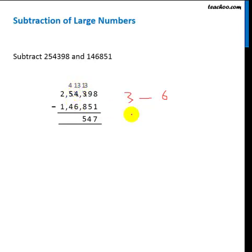Now thirteen minus six is seven. So this becomes seven. And here, four minus four is zero. Two minus one is one. So our subtraction is something like this. Now we add the commas. This comma comes down and this comma comes down. So our subtraction is this.